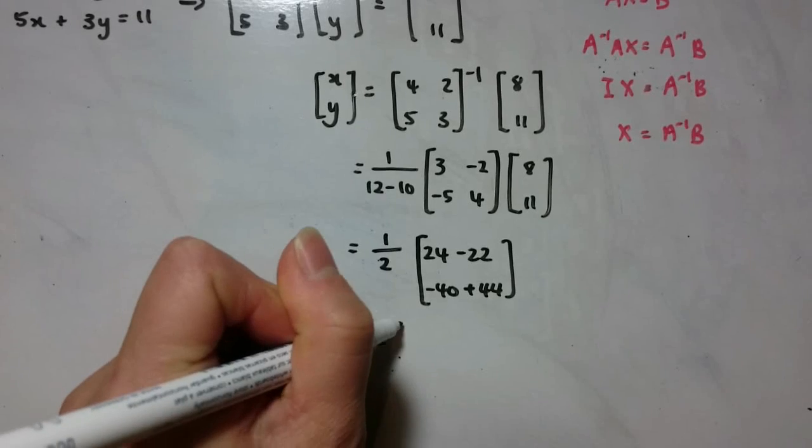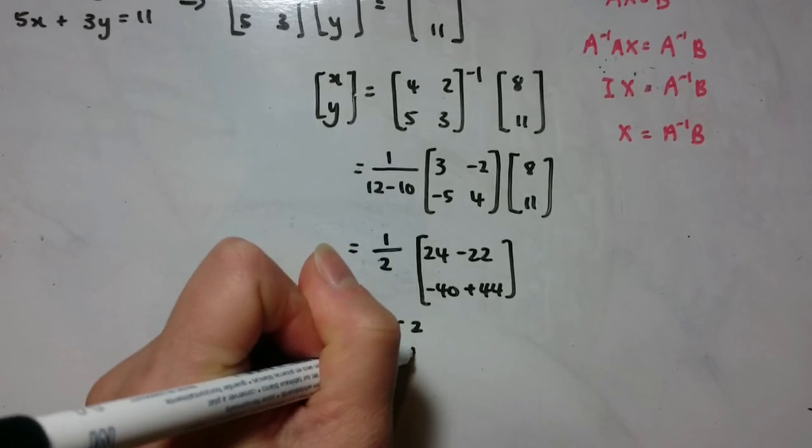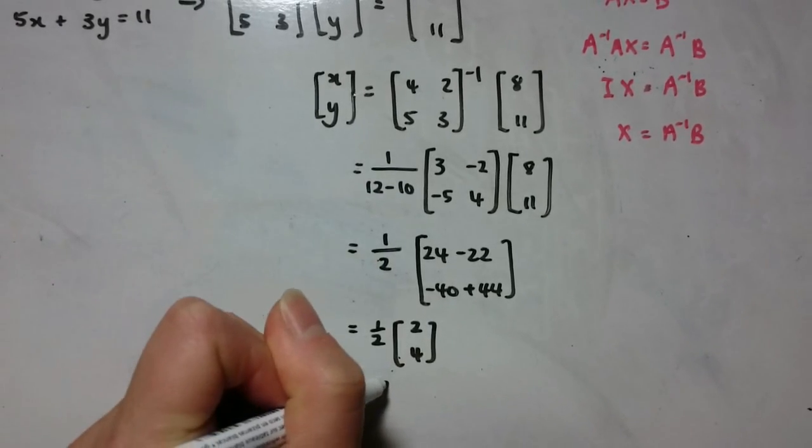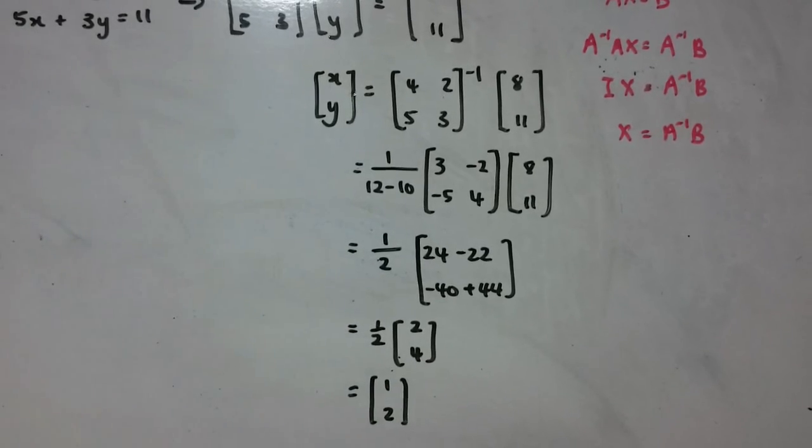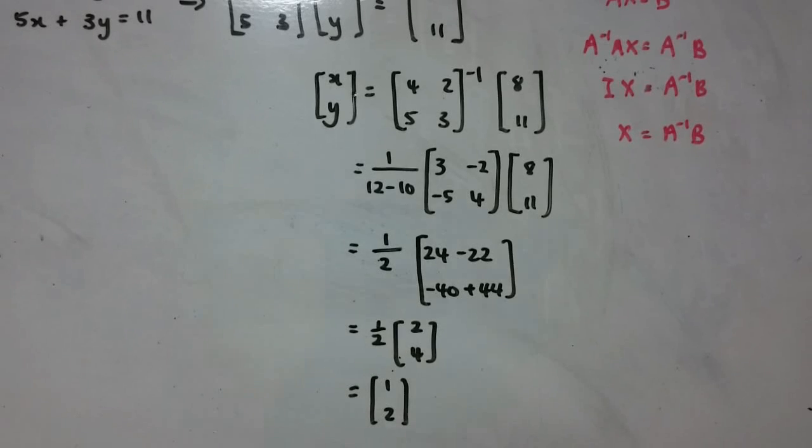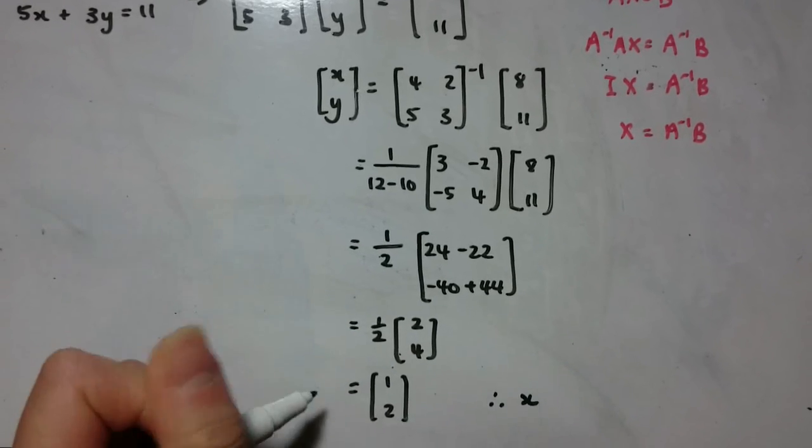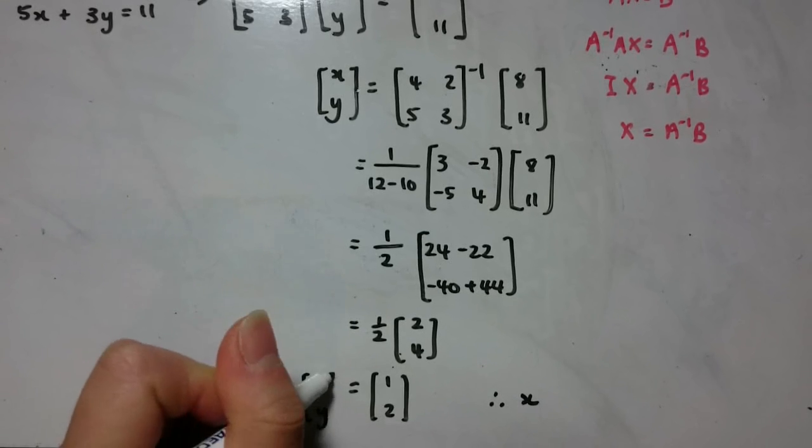So just cleaning up that matrix there, we have 2 and 4, which gives us 1, 2. The question, can't see it anymore, but it says solve for the values of x and y. So we actually need to state that x, this is what we have here, x, y equals 1, 2. So x is equal to 1, and y is equal to 2.